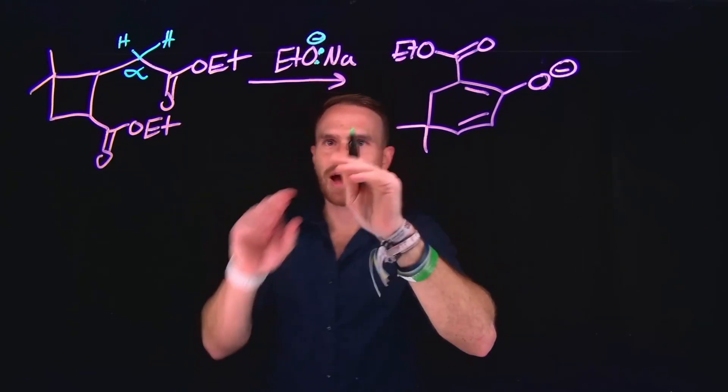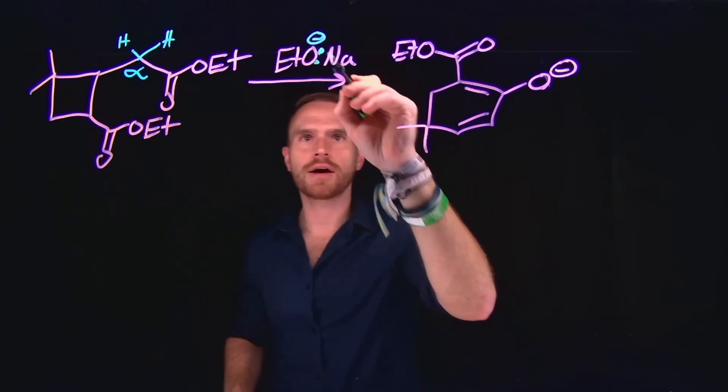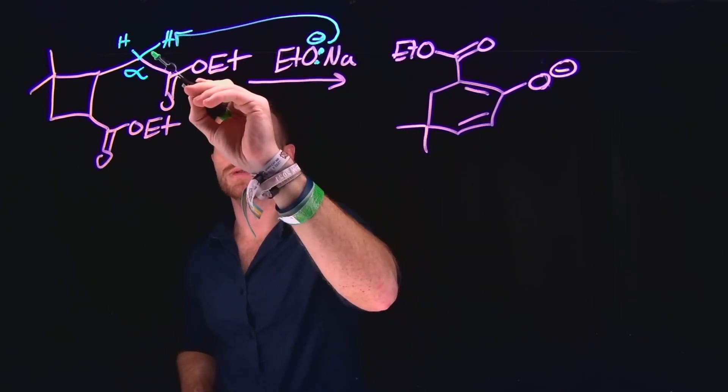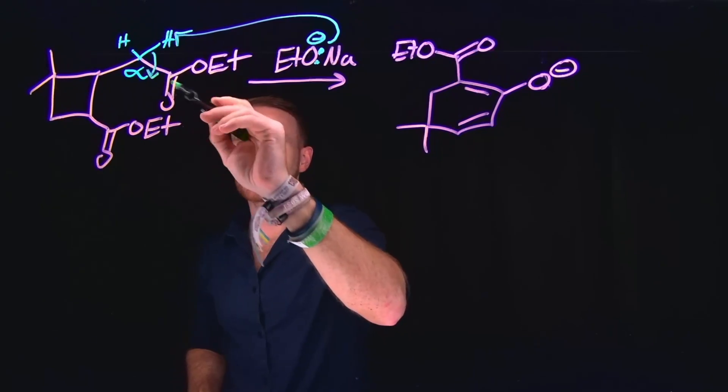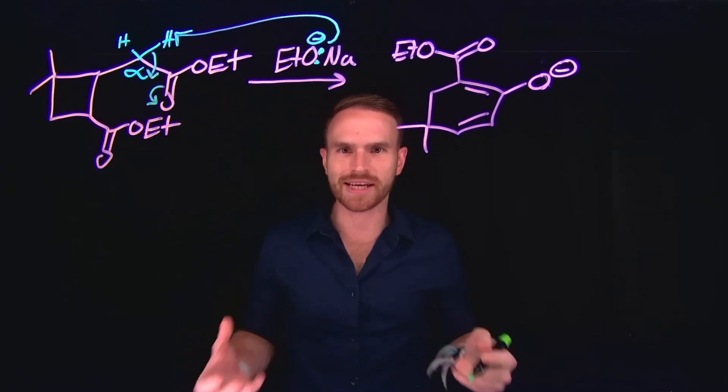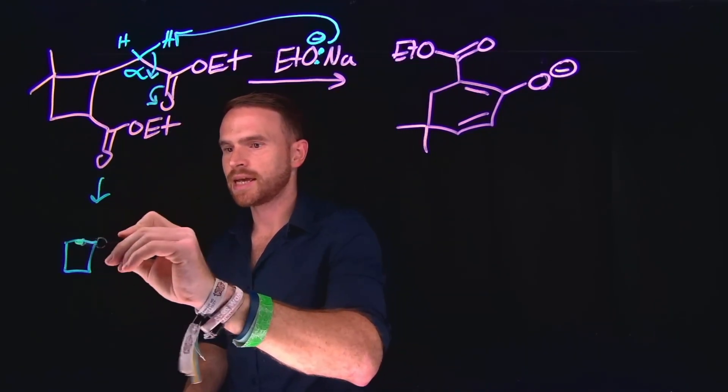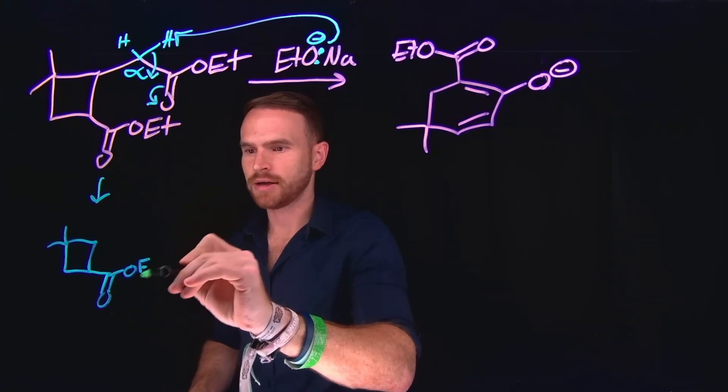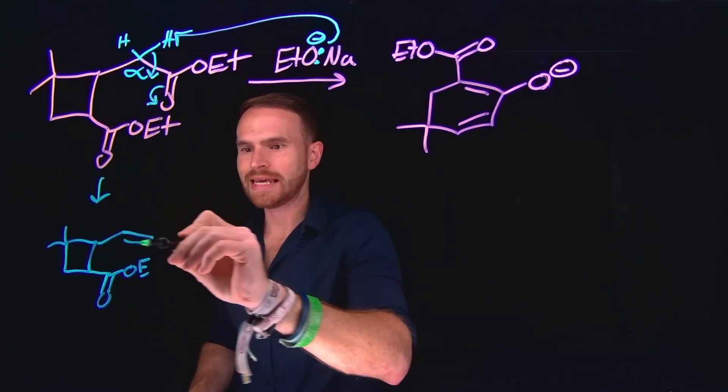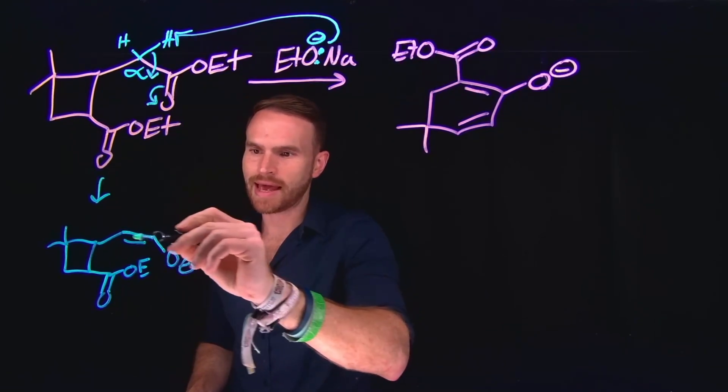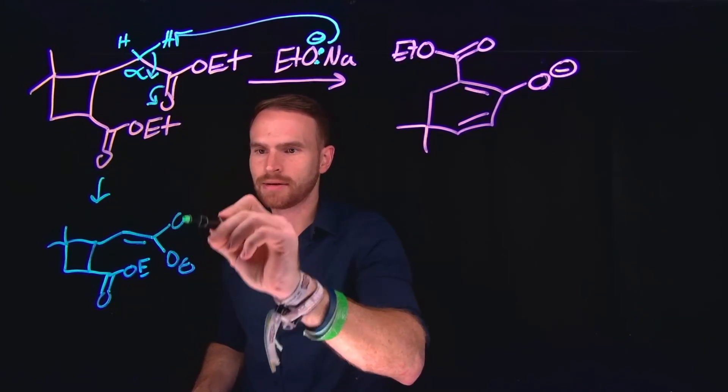So remember that these ions separate into their component ions, which means this can act as a base and come and deprotonate one of these protons, which will move the electrons down here and kick up these pi electrons up here, forming our enolate. That enolate is going to still contain this four-membered ring. We still have our other ester on this side. And now we have formed our enolate species, which has a negatively charged oxygen and an alkene adjacent to that. And remember, our ethoxide portion of our previous ester is still present.